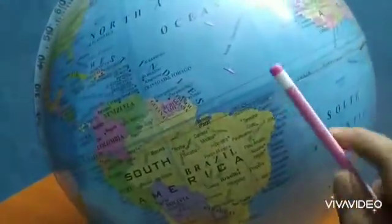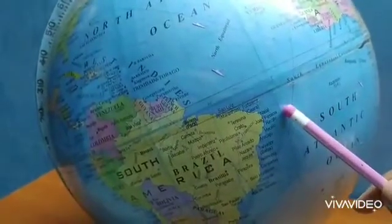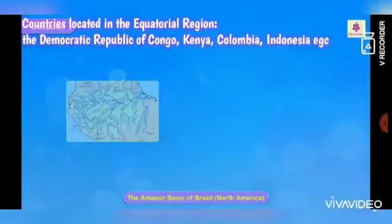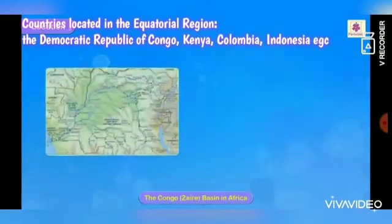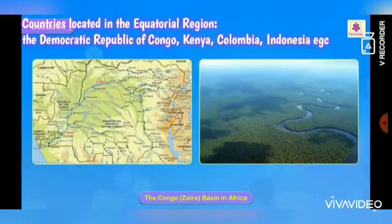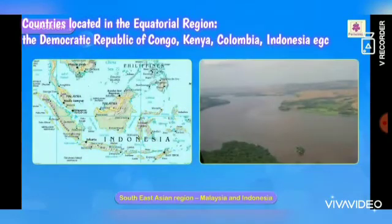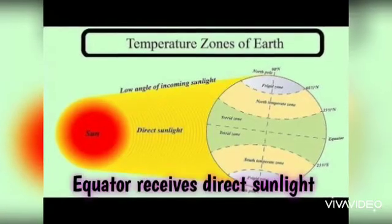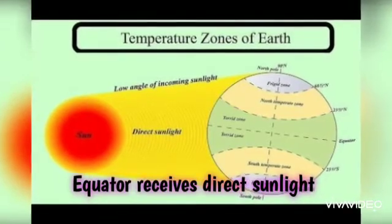The equatorial region lies both in the northern hemisphere and in the southern hemisphere. Now we can find out which are the countries located in the equatorial region. Some of the countries are the Democratic Republic of Congo, Kenya, Colombia, Indonesia, etc.